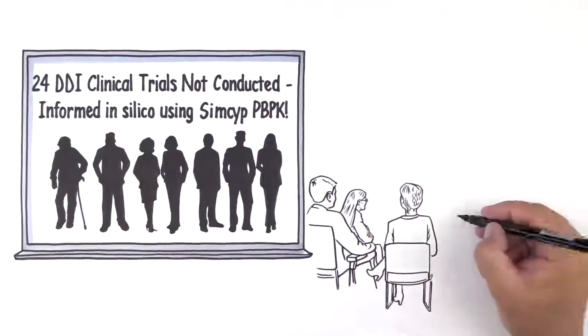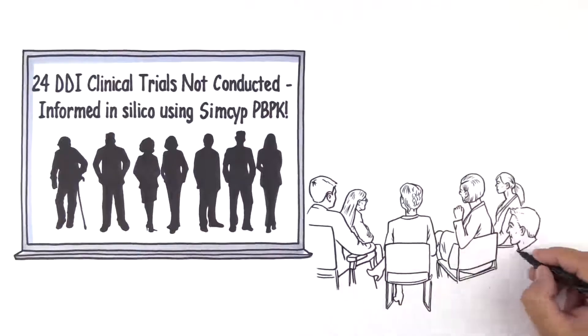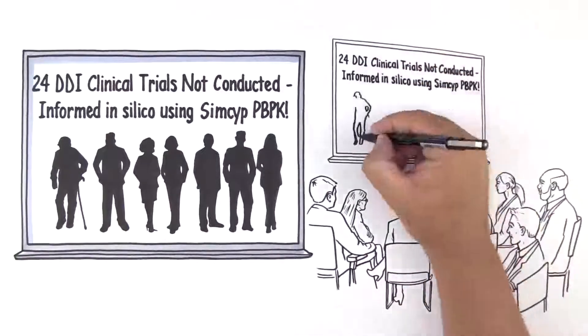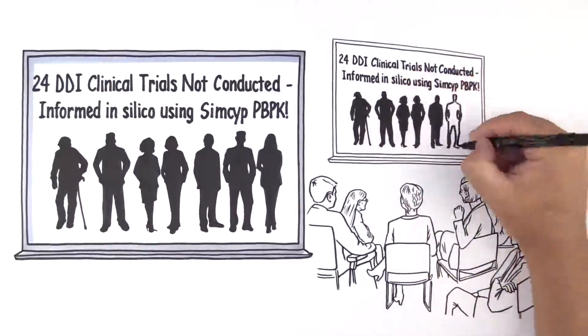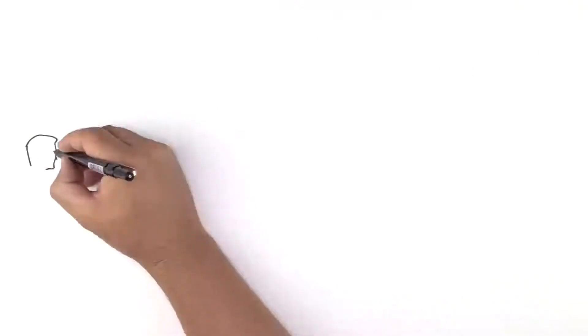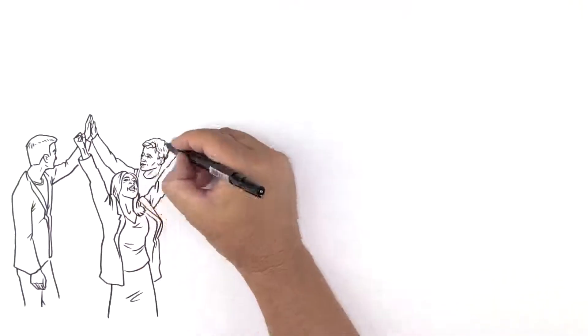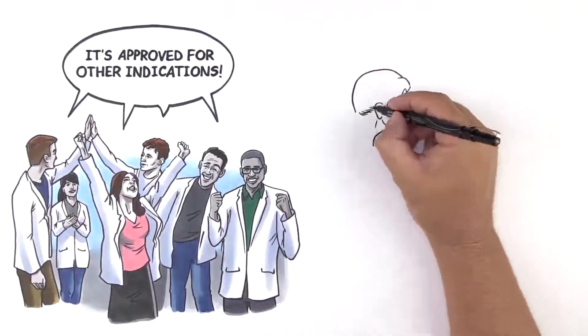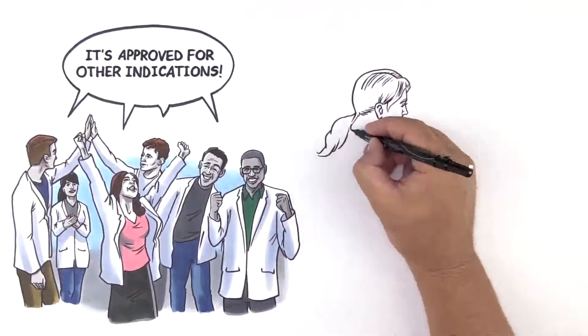The Imbruvica case study was highlighted in an FDA-hosted workshop as an example of a successful application of PBPK predictions to fill in clinical gaps during the evaluation of a breakthrough drug treatment. The drug was approved as a breakthrough therapy for mantle cell lymphoma, but is now approved for multiple uses, including first-line chronic lymphocytic leukemia.